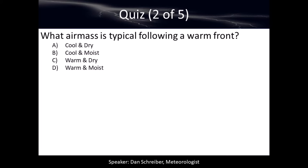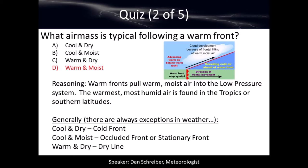What air mass typically follows a warm front? We can knock out cool and dry and cool and moist right away — a warm front is not bringing cool air. So it's either warm and dry or warm and moist. Warm fronts, especially in the eastern half of the United States, generally bring warm air from the Gulf of Mexico, which is warm and muggy. The correct answer is warm and moist. Cool and dry air mass generally follows a cold front; cool and moist is generally associated with an occluded or stationary front; and warm and dry is behind a dry line.